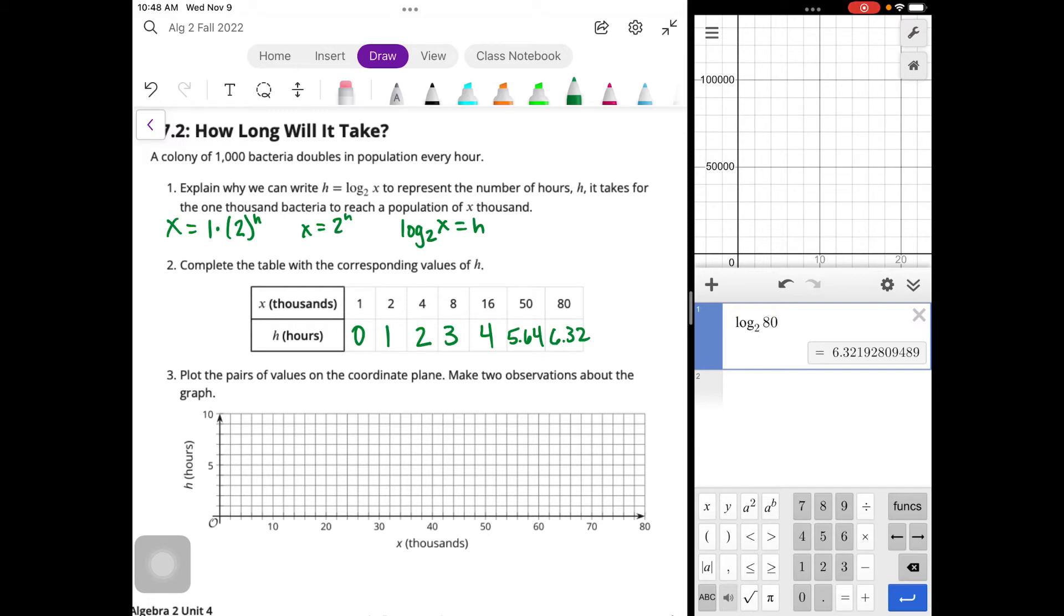So we have 1, 0, and that's going to be right here. 2, 1. 4, 2. 8, 3. 16, 4. So 10, 12, 14, 16, 4. And then 50 is 5.64, so that's about halfway in between, a little closer to the 6. And then 80 is 6.32, so that's a little above the 6. And so if we can kind of connect that with a curve. There we go. Good enough. All right. So there is our graph.